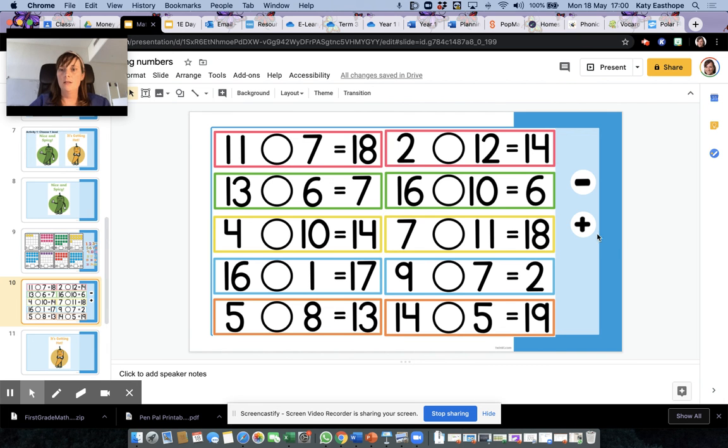Oh no, the symbols are missing - plus and minus. 11 something 7 equals 18. Let's think. So when I add, my answers get bigger. When I subtract, my answers must be smaller than what I started. Let's use those clues to help us. So 11 and something equal 18. Now this is the bigger number, so this one must be a plus. 11 plus 7: 11, 12, 13, 14, 15, 16, 17, 18, yes. Now this one I've got 13 something 6 equals 7. Now the answer is smaller than what I start with, so it must be a subtraction.